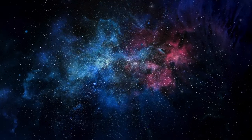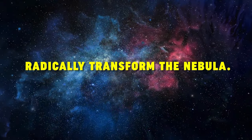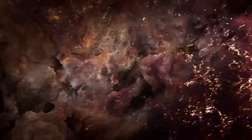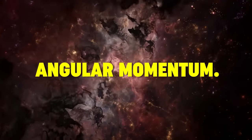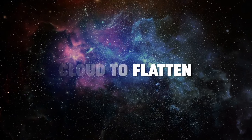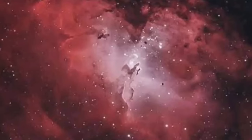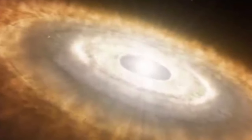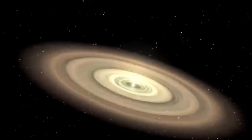This gravitational collapse marked the beginning of a process that would radically transform the nebula. As the nebula collapsed, it began to spin, a consequence of the conservation of angular momentum. The spinning caused the cloud to flatten into a disk, with most of the material gradually spiraling towards the center. This rotating disk, known as the protoplanetary disk, was the birthplace of the planets.